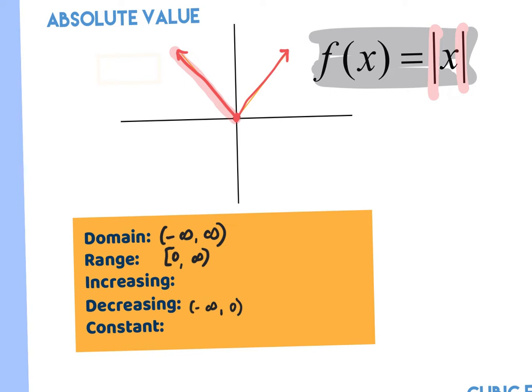Increasing and decreasing always get parentheses. Then the graph changes direction and comes back up again — increasing from zero to positive infinity. There is no constant. So you can put 'none' for the constant.